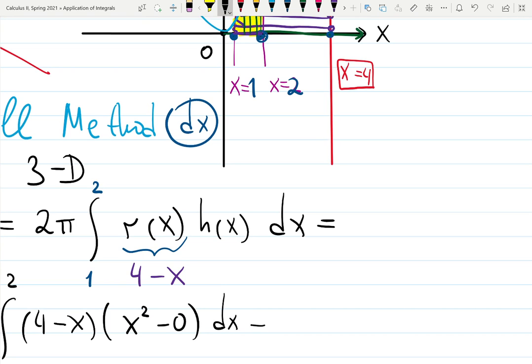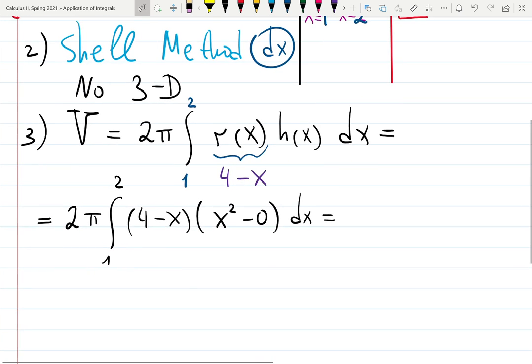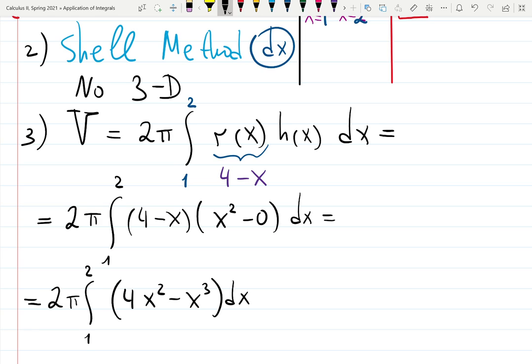Now I just need to finish integration. Let me first distribute. It's going to be 4x squared minus x cubed dx. It's going to be 2π. Integrate 4x cubed over 3 minus x to the 4 over 4 from 1 to 2.